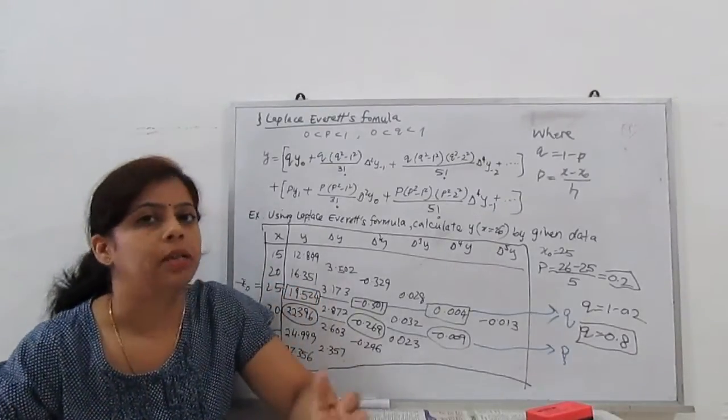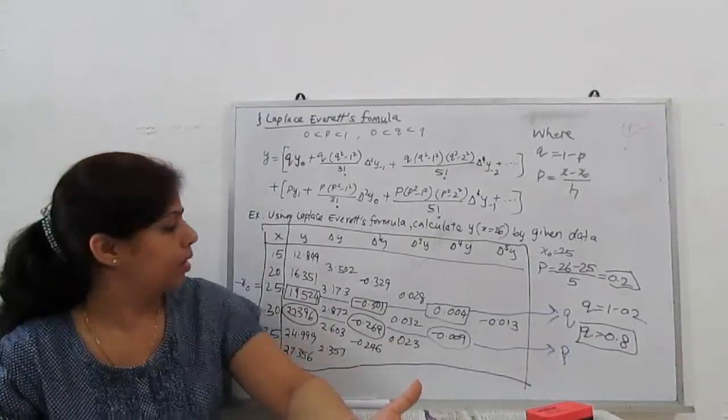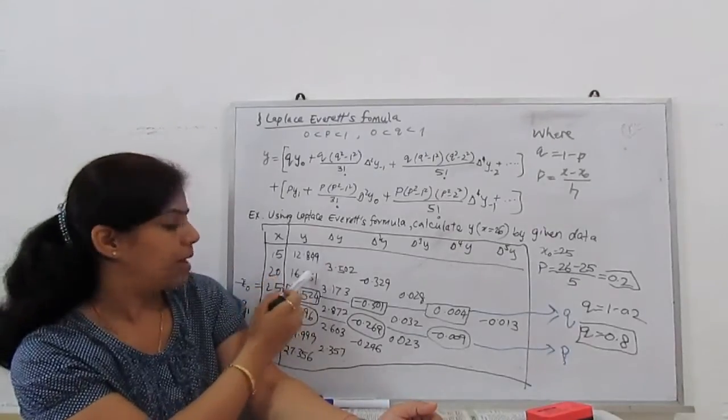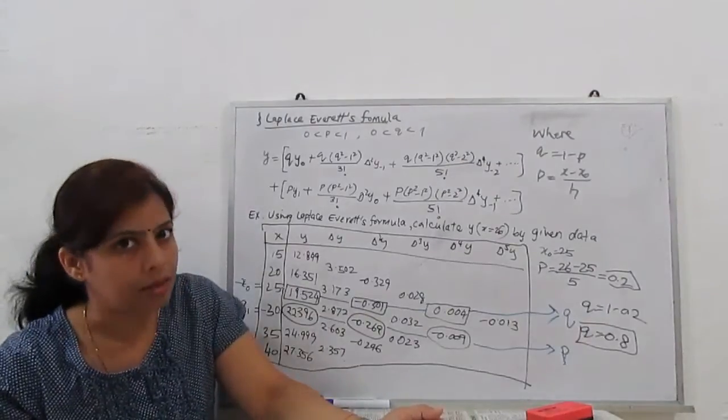Step 1: we have to make the table - del Y, del² Y, the forward difference table. This minus this, this minus this, and so on. So first step is we have to make the table.